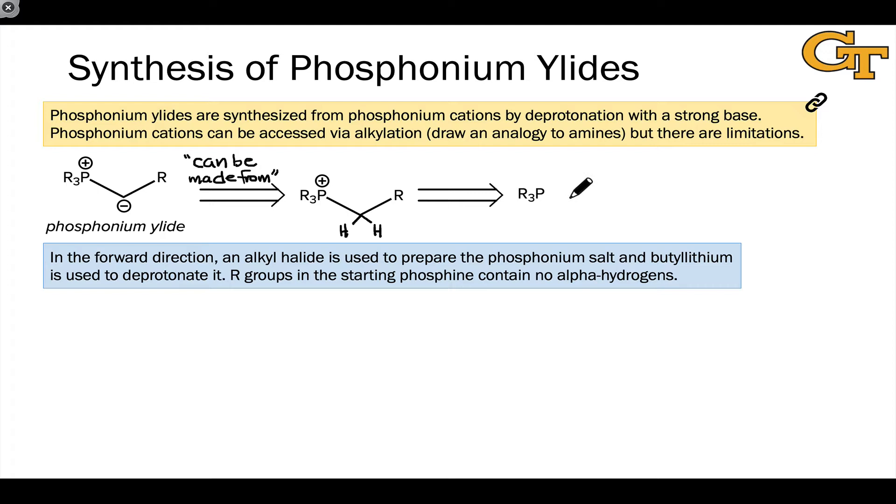Typically, the way we do this is we use some phosphine with R groups that cannot be deprotonated, in other words, that lack hydrogens linked to the carbon that is linked to phosphorus. The most common choice is to use something like triphenylphosphine with three phenyl groups linked to the phosphorus atom. Notice in this compound that each of the phenyl rings have no hydrogens at the carbon linked to phosphorus. This prevents deprotonation issues with these carbons when we treat with base to generate the ylide.